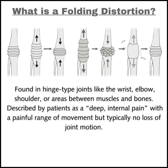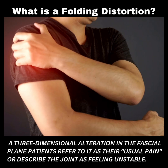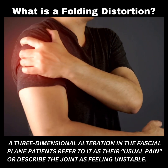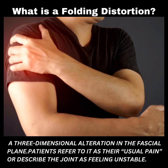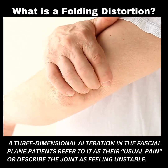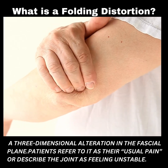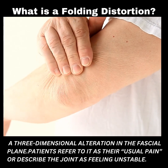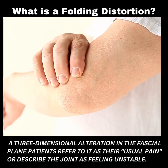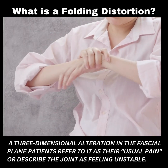What is a folding distortion? It is a three-dimensional alteration in the fascial plane, found in hinge-type joints like the wrist, elbow, shoulder, or areas between muscles and bones. It is described by patients as a deep internal pain, with a painful range of movement but typically no loss of joint motion. Patients refer to it as their usual pain, or describe the joint as feeling unstable.